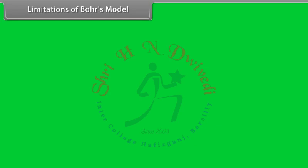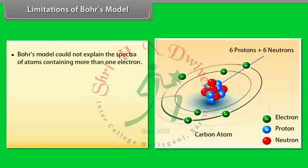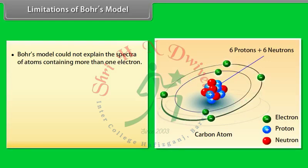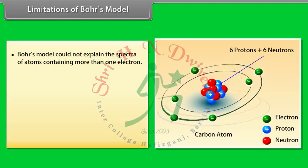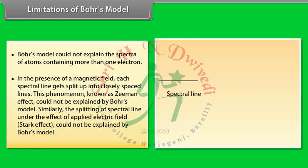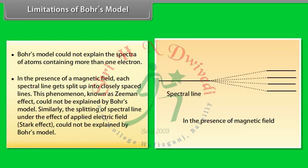Limitations of Bohr's model: 1. Bohr's model could not explain the spectra of atoms containing more than one electron. 2. In the presence of a magnetic field, each spectral line gets split into closely spaced lines. This phenomenon, known as the Zeeman effect, could not be explained by Bohr's model.